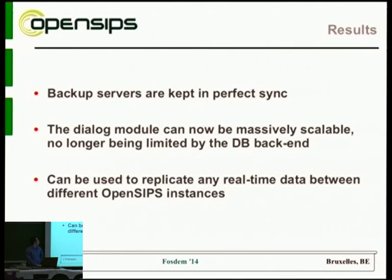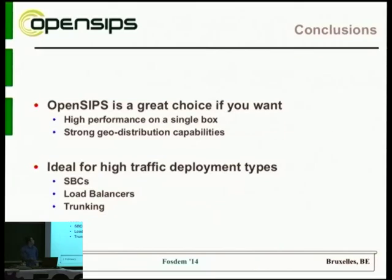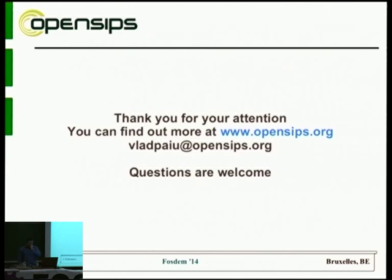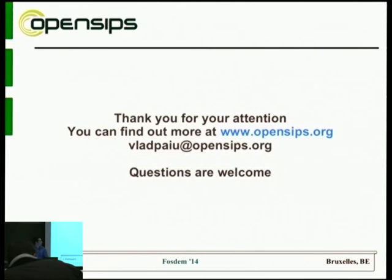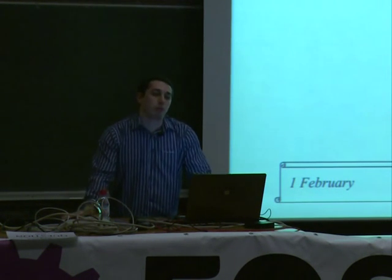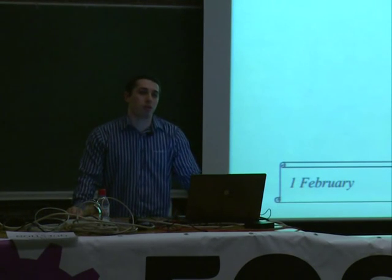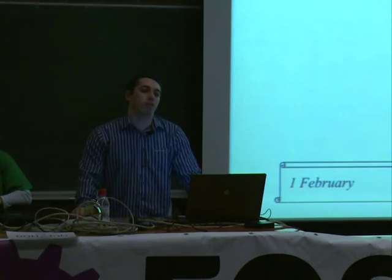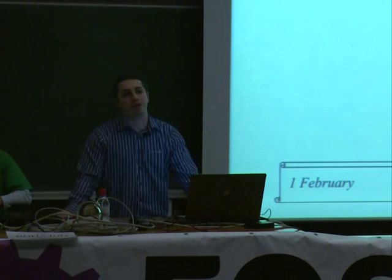So the conclusions: we can now be easily geo-distributed and offer the same performance that OpenSIPS has become known for. Regarding a question on RTP proxy: this is work in progress — we're thinking about using RTP proxy to enable instant failover, but at the moment they are completely decoupled, so this binary interface solution is just for OpenSIPS.